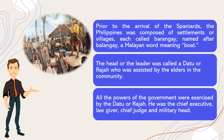All the powers of the government were exercised by the Datu or Raha. He was the chief executive, law giver, chief judge, and military head. As stated by Benaflor in 2016, the Philippines was occupied by people from nearby islands who formed themselves into Barangays. The Barangay was the local government unit headed by a Raha or Datu. Maginoos, who acted as the Council of Elders, assisted the Datu in implementing rules, passing judgment, and penalties to maintain peace and order.